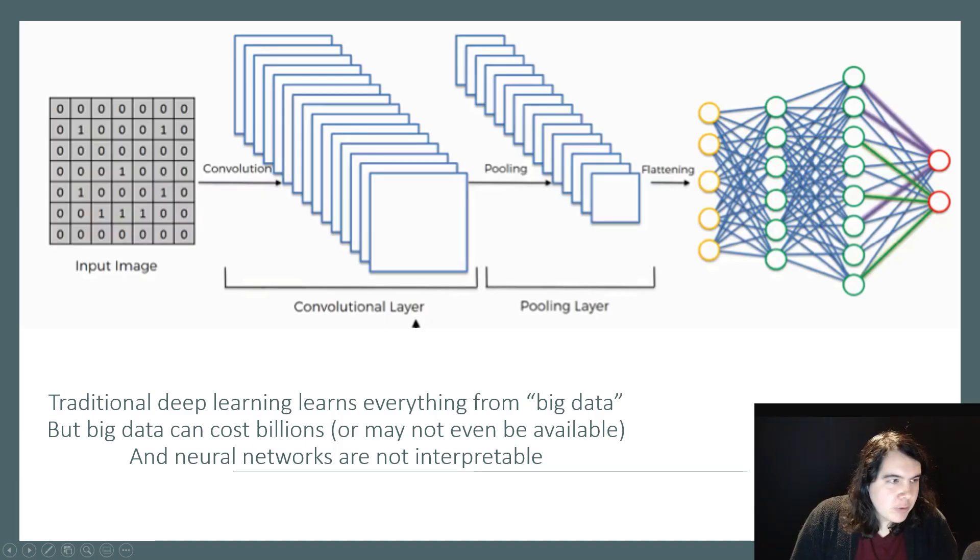Traditional deep learning has the ability to learn everything from big data, but we know the downsides of that. Big data can cost billions. It might not even be available. Think about getting big data from a clinical trial that hasn't run yet. That's just not even possible. But you can't run a huge clinical trial without scientific knowledge to know it's safe. In a lot of cases, it's very difficult to get big data.